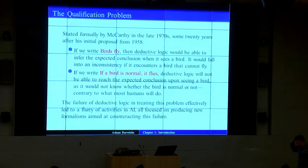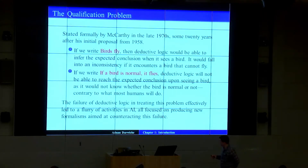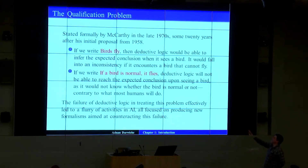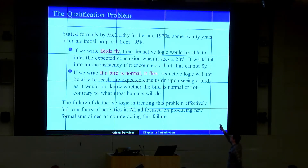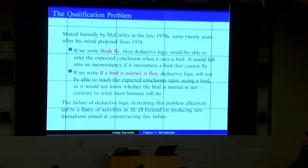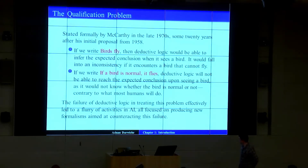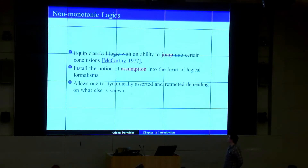This was later termed the 'qualification problem' in AI by McCarthy. The dilemma: if you just write 'birds fly,' you make the conclusion but get into a contradiction if the bird doesn't fly. If you write 'if a bird is normal, then it flies,' you have to deal with normality and so on. The failure of deductive logic in treating this problem effectively led to a flurry of activities in AI, all focused on producing new formalisms.